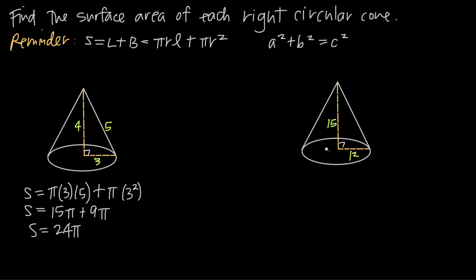Now if we look at a second example, we have this cone. We know that the height of the cone is 15 and the radius is 12, but we don't have the slant height. And we need slant height so that we can plug in for l in our surface area formula. So how are we going to get slant height?